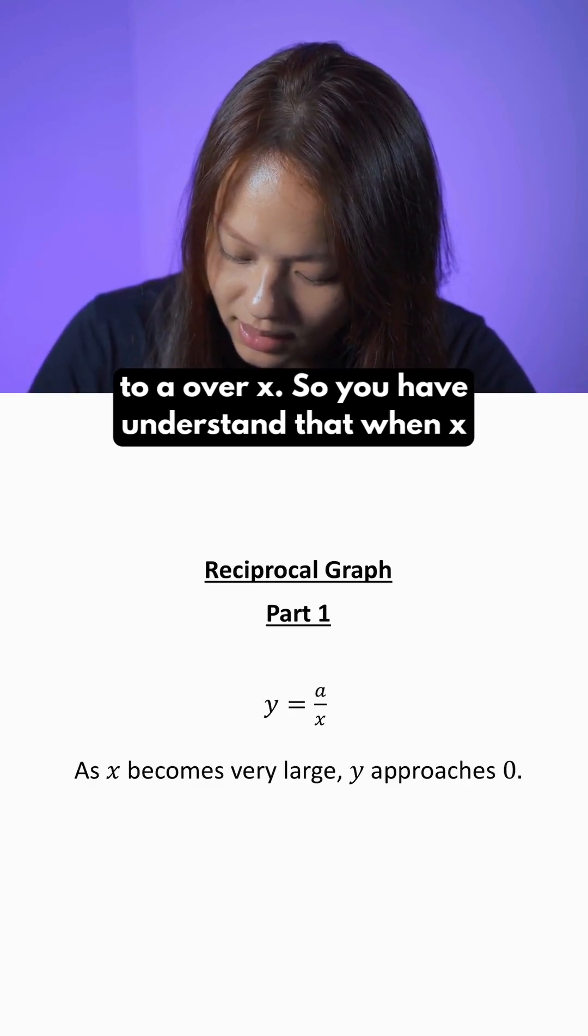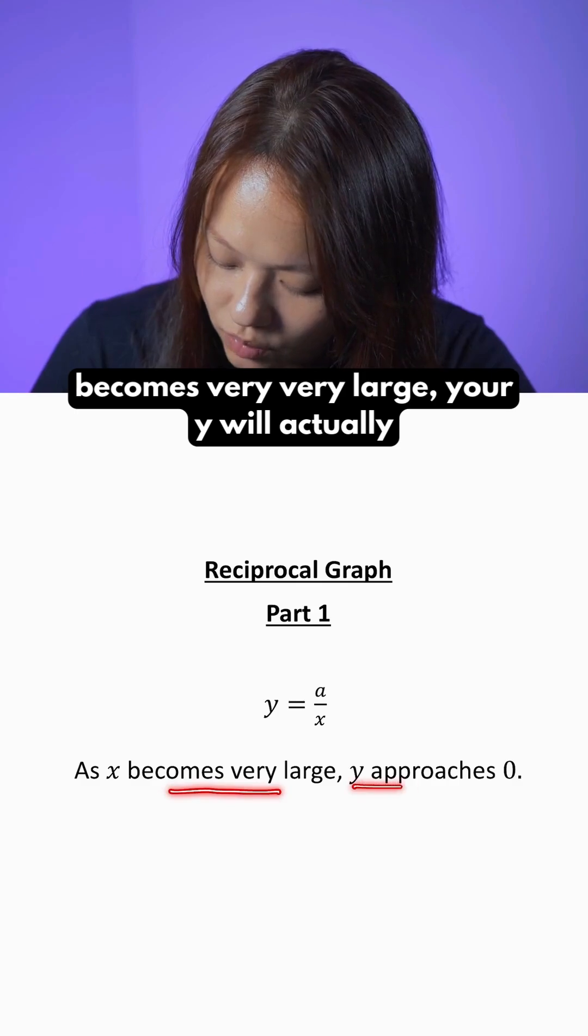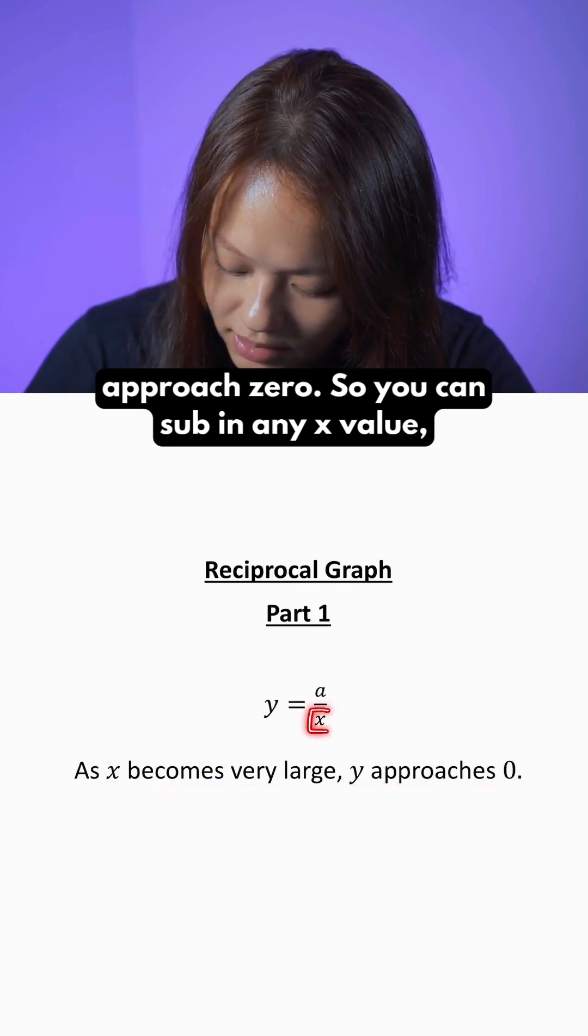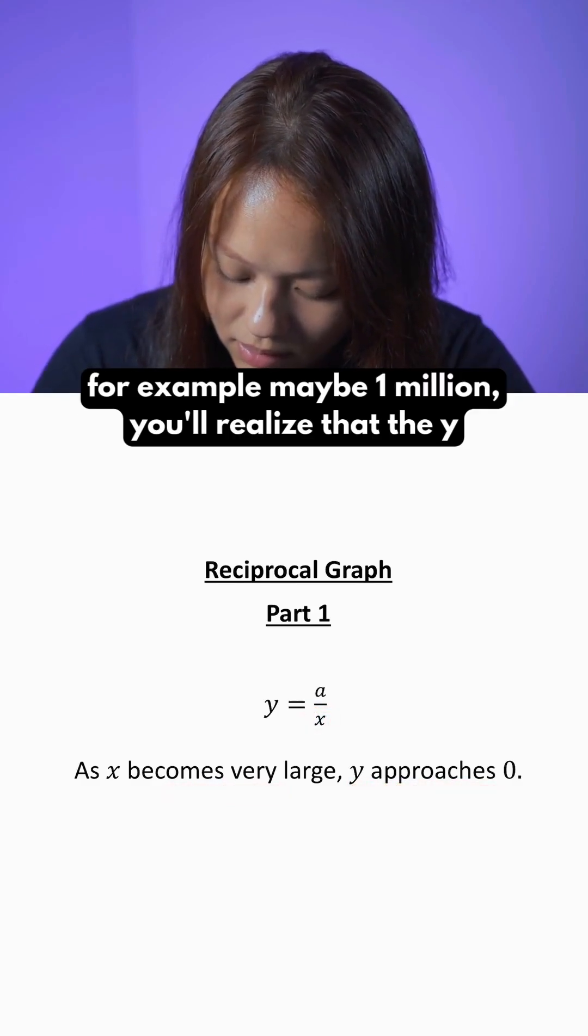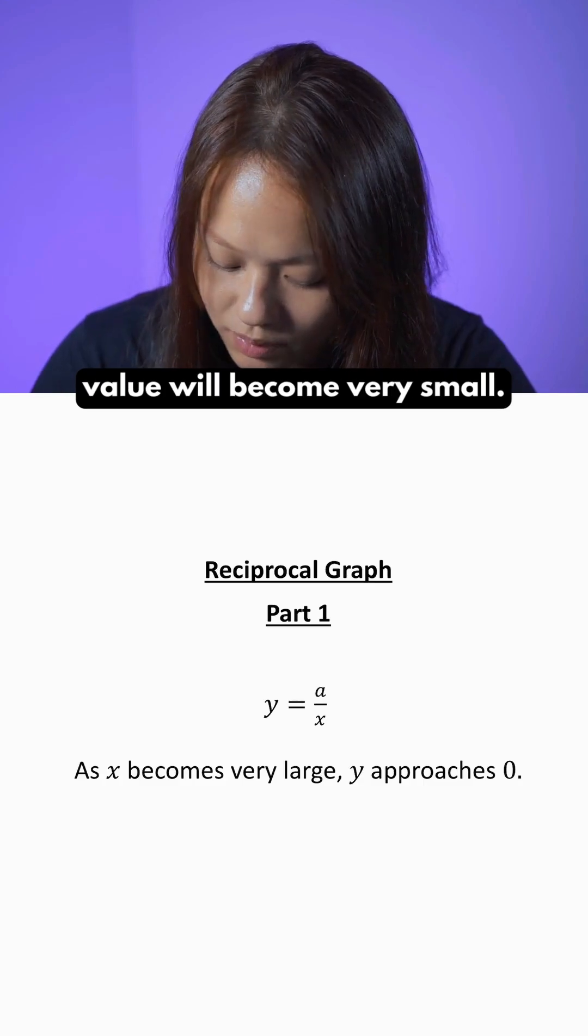You have to understand that when x becomes very, very large, your y will actually approach 0. So you can sub in any x value, for example, maybe 1 million, you'll realize that the y value will become very small.